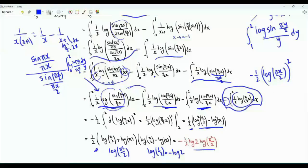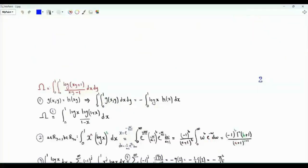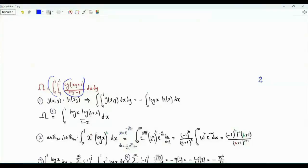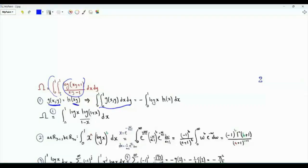The double integral, which we call Ω, is the integral over x from 0 to 1 and y from 0 to 1 of log((xy+1)/(xy−1)). The first step is to reduce this double integral into a single integral, exploiting the fact that the integrand is a function of the product xy. In a previous video, we derived that if g(x,y) = h(xy), then the double integral over [0,1]² equals minus the integral from 0 to 1 of h(x)·log(x) dx.